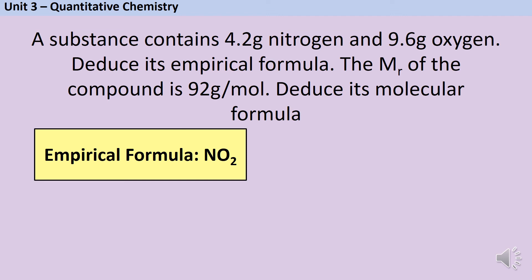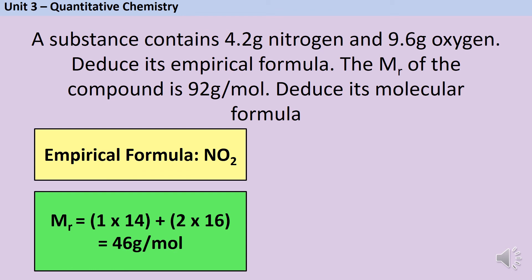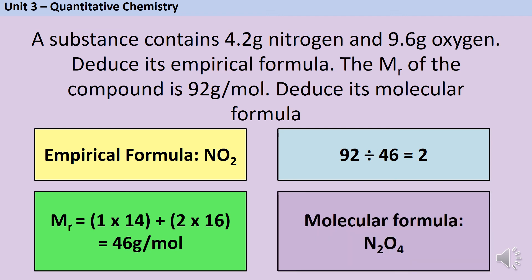So one lot of 14 for nitrogen, two lots of 16 for oxygen gives me a relative formula mass of 46, and then I need to see how many times does 46 fit into 92. 92 divided by 46 is 2. This basically tells me that my empirical formula will fit twice into the relative formula mass that I've got. So I need to double everything in that empirical formula and that gives me N2O4 and that is my molecular formula.